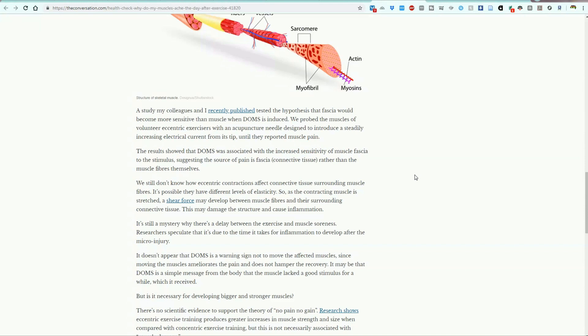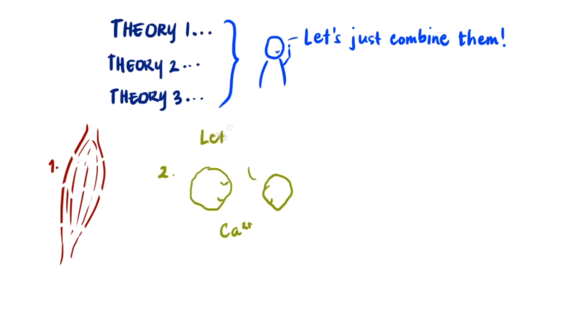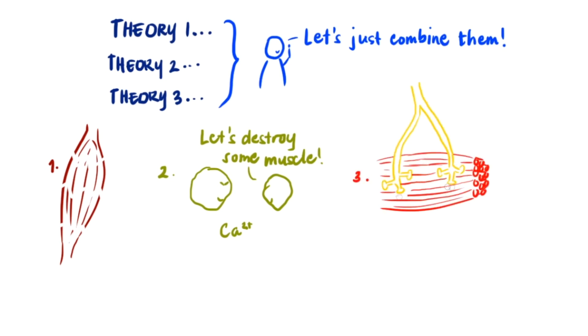There have been some interesting studies by Ken Nosaka where he's put a probe or acupuncture needle directly into the muscle and found that it was fascial stimulation that caused most of the problem. So myth two is the sense that it's related to muscle damage. He's saying that actually only one percent of muscle fibers are typically damaged.